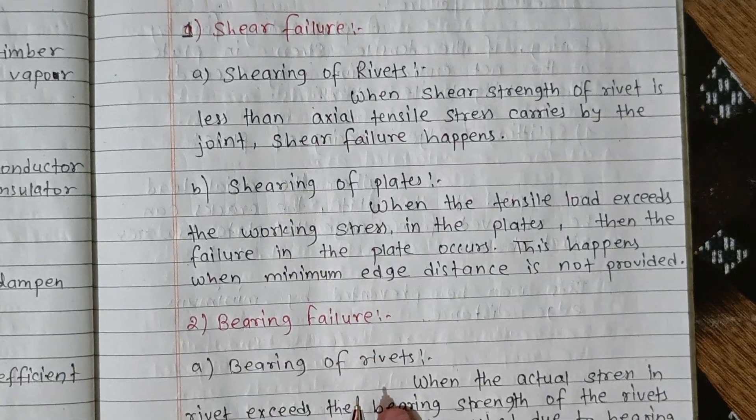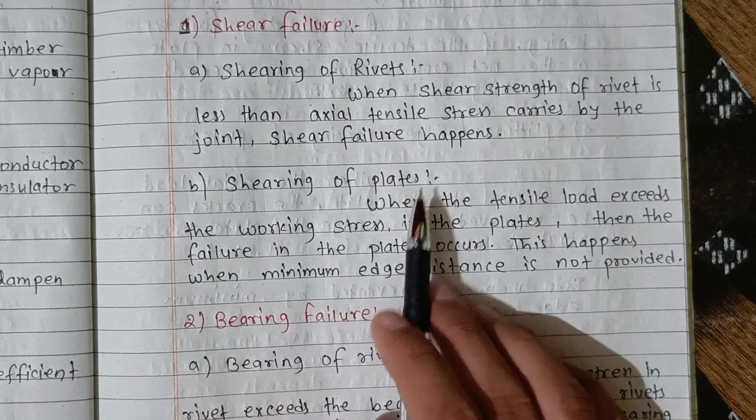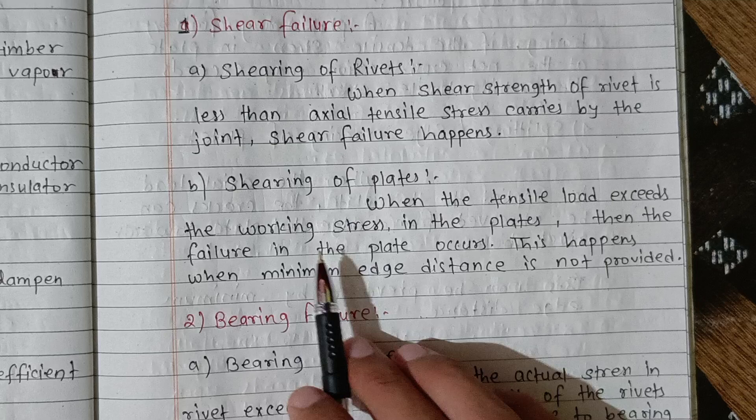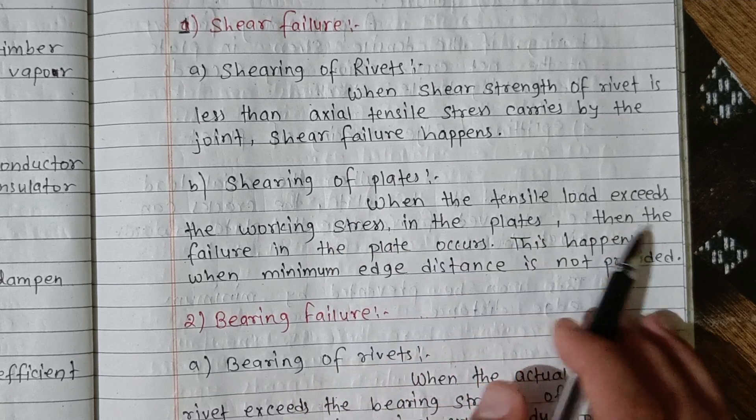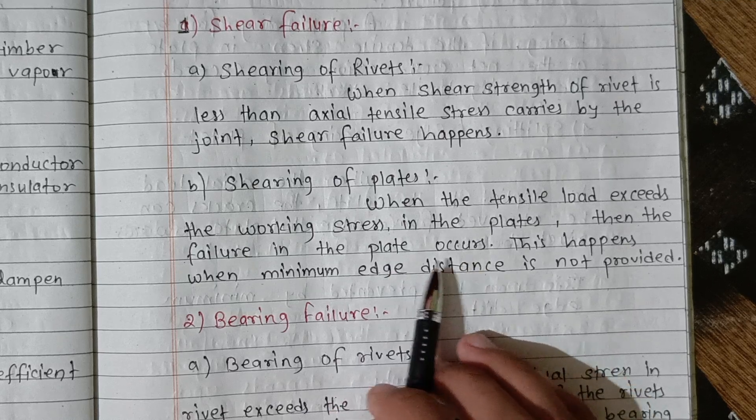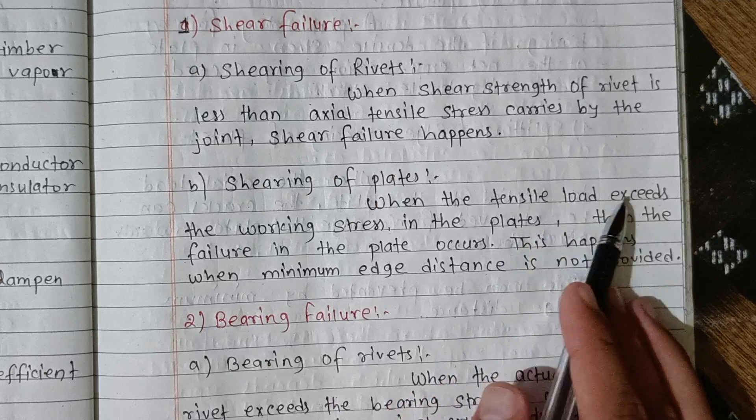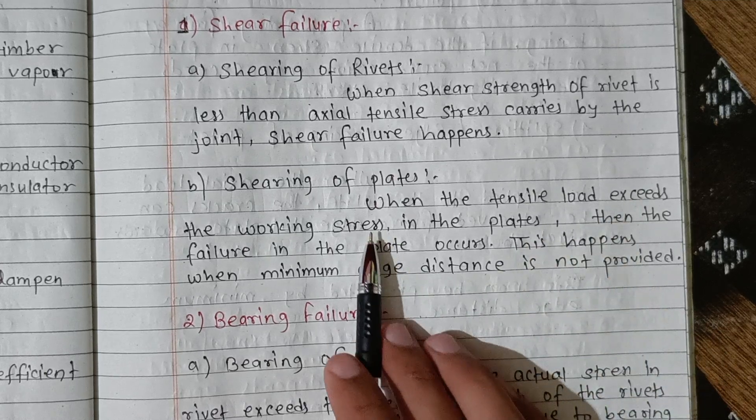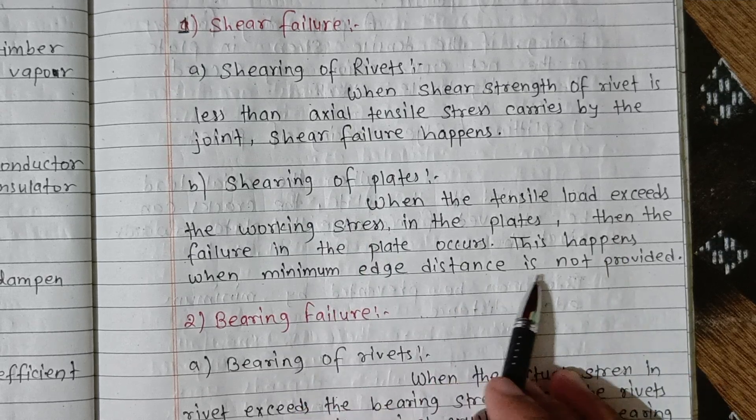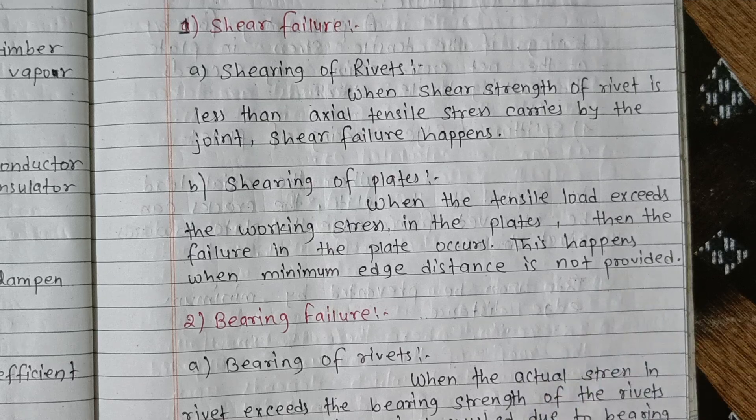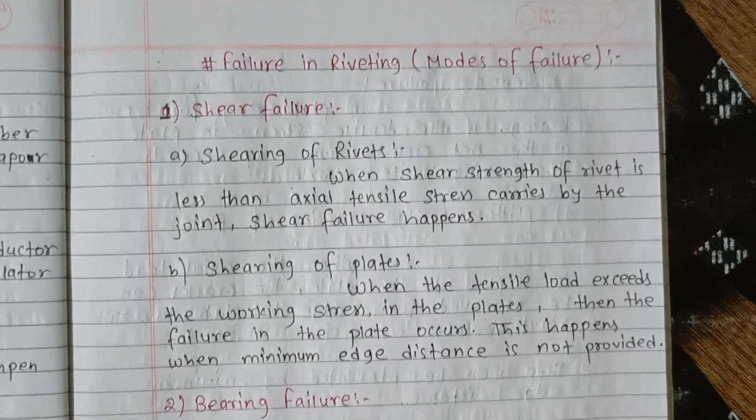Shearing of plate: when the tensile load exceeds the working stress in the plates, then the failure in the plate occurs. This happens when minimum edge distance is not provided.